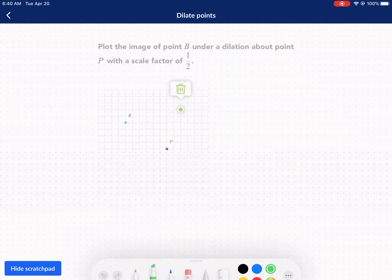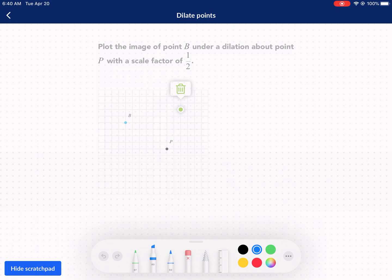Alright, so one thing that we need to clear up. This point B is what we would call the pre-image. This is before it undergoes the transformation, which in this case is a dilation. So that is the pre-image, a little sloppy with that highlight job there, but this is the pre-image right there. Now, we have to go around point P. So P is like the focal point, and the scale factor is one-half.